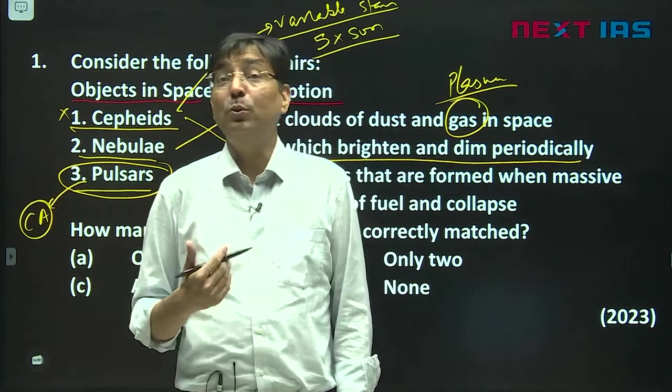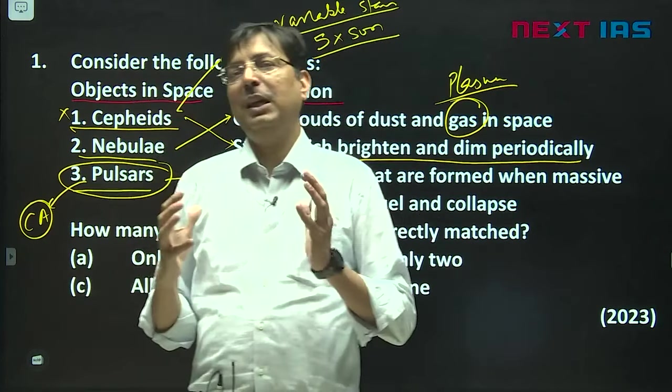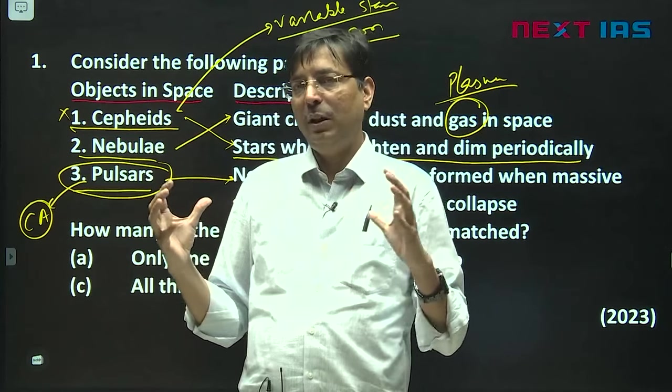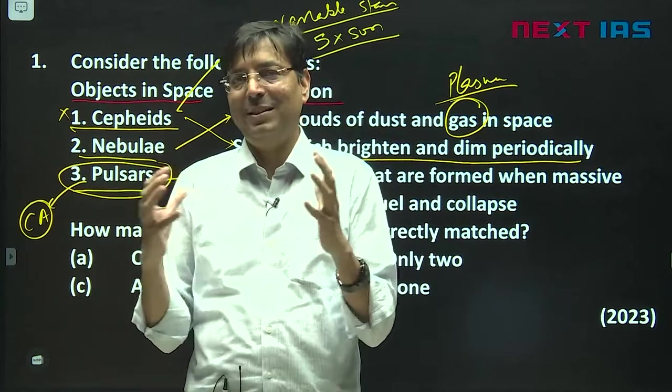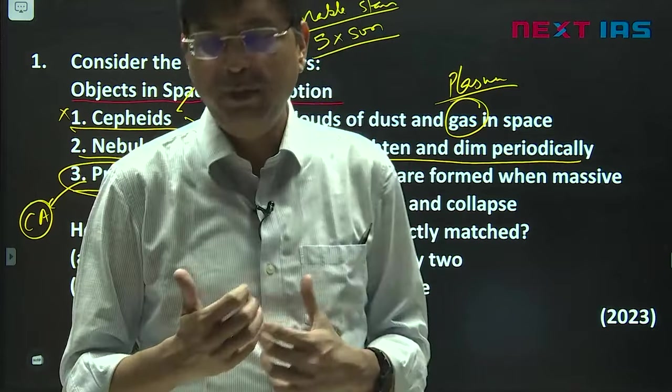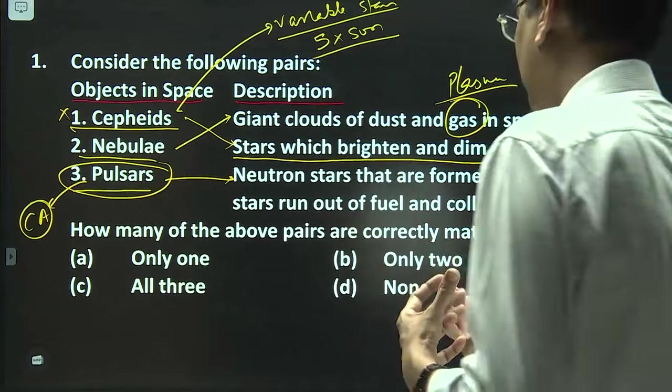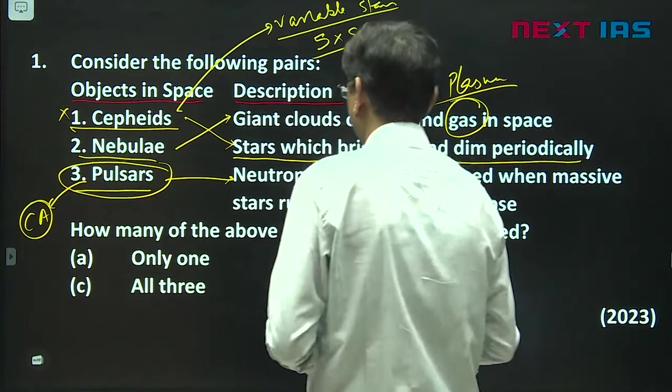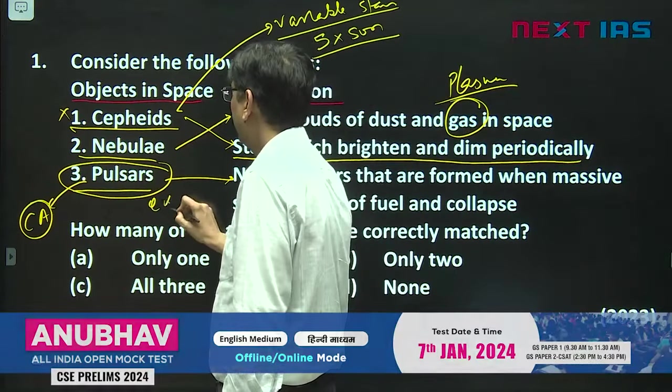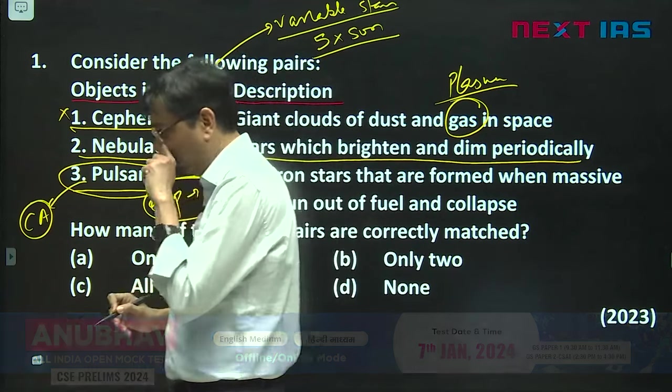Pulsars are like a type of neutron star. Now what is a neutron star? Neutron star is something where the sun is compressed in a diameter of around 20 kilometers. And here the gravity is so strong that the electrons and the protons combine to form the neutron. That is called neutron star.